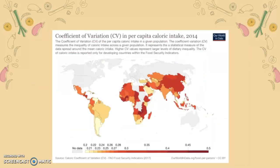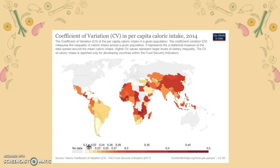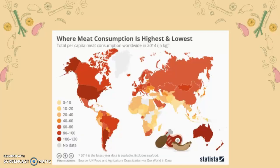The coefficient of variation in per capita caloric intake shows the inequality of caloric intake — the disparities between how much people are consuming within a nation. In countries in central Africa and China there are large disparities between those with high and low caloric intake, whereas in places like South Africa the spread is relatively more equal among different people.